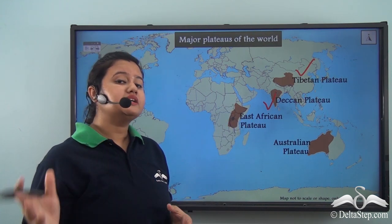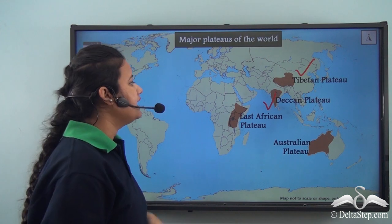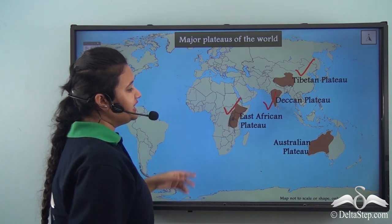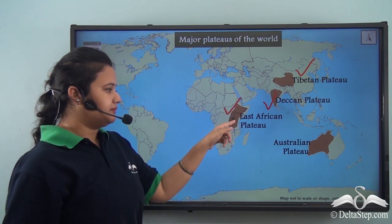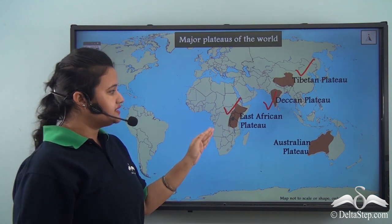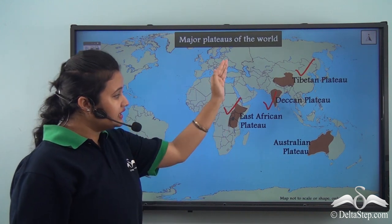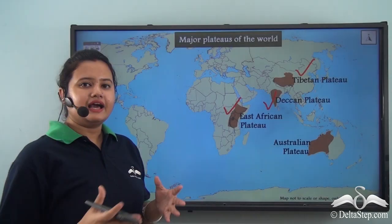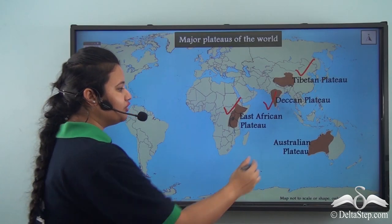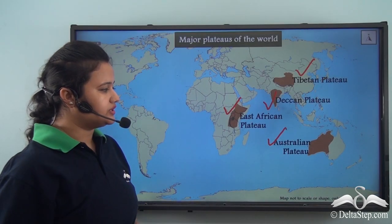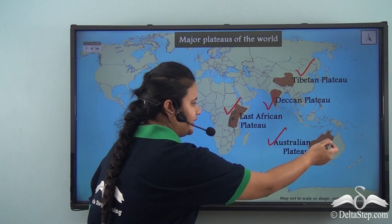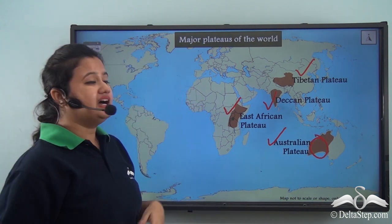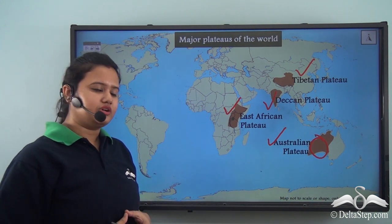Next we have the East African Plateau, situated on the eastern side of the African continent. Lastly, we have the Australian Plateau, situated on the western side of Australia. These are the major plateaus of the world.